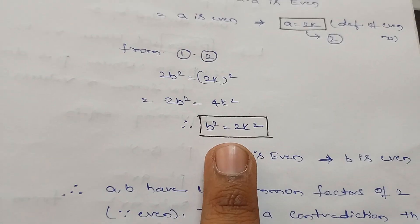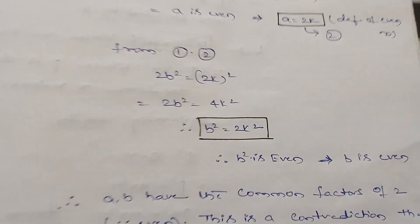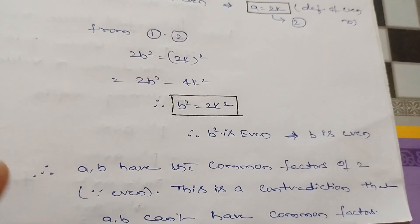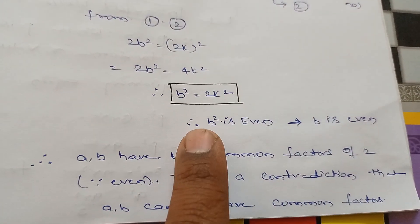We get 2b² = (2k)², so b² = 2k². Here, we got b in terms of the product of 2 times something, which is the definition of an even number. Therefore, b² is even, which implies b is also even.